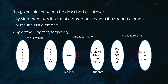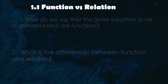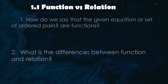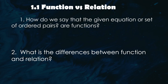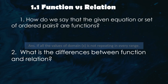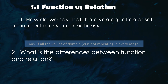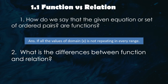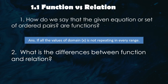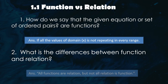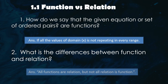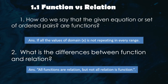Here's a key question: how do we know if a given relation is actually a function? The answer lies in the domain. If every element in the domain — that's our x values — maps to one and only one element in the range — our y values — then it's a function. Remember, all functions are relations, but not all relations are functions. Think of a function as a special kind of relation.